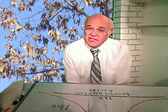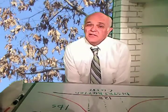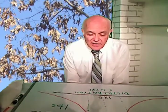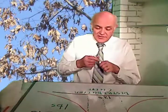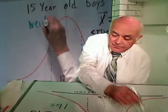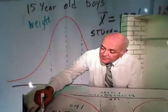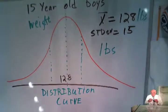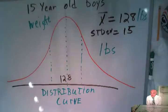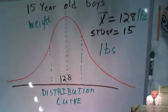The theme of this is really more statistics than it is chemistry. Let's look at a distribution graph of the weight of 15-year-old boys. The boys weigh an average of 128 pounds, and the standard deviation is 15 pounds. As a description of a group of numbers, the average is 128 and the standard deviation is 15. We know the boys have different weights, and we put them in a distribution curve and find out they do in fact have different weights.